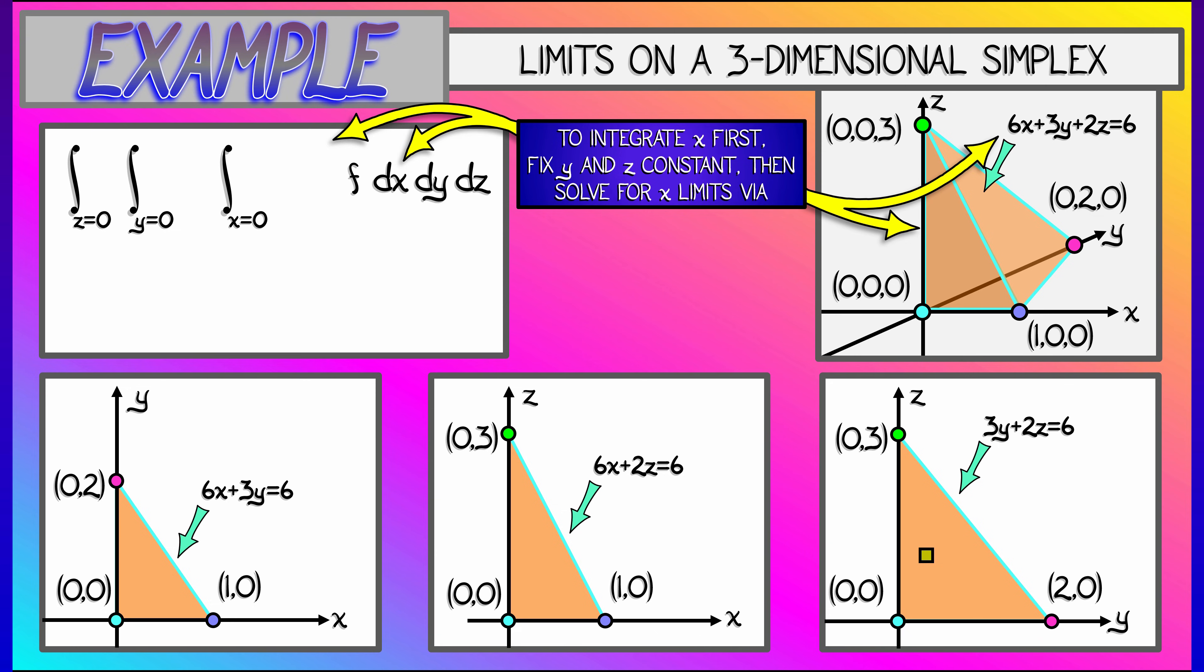And having done so, we then solve for the limits on x. Now, it's pretty easy to see that the lower limit for x is zero. What about the upper limit? So to do that, we look at the equation for the plane, and we think of y and z as being constants. Then we solve for x. So moving the 3y and the 2z over to the right-hand side, we get x equals 1 minus y over 2 minus z over 3 for the upper limit.